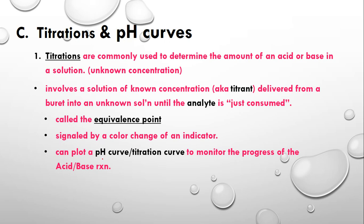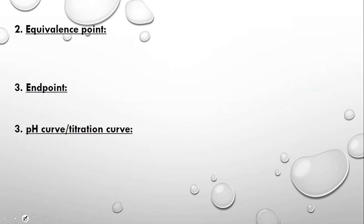Once you reach your equivalence point, it is sometimes helpful to continue the titration, monitoring the pH for several more milliliters of titrant addition, so that you can get a nice pH curve or titration curve. You can plot the pH curve to monitor the progress of your acid-base reaction, or for a redox reaction, to monitor the progress of the redox reaction.